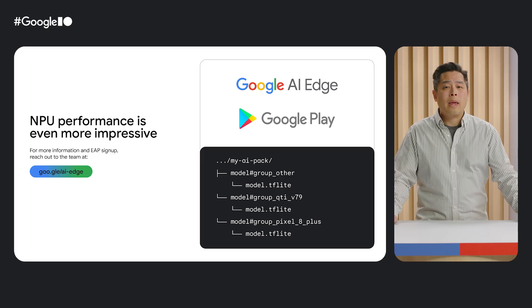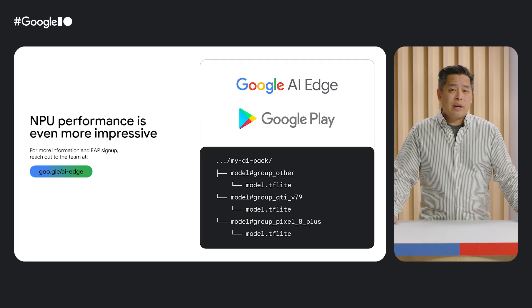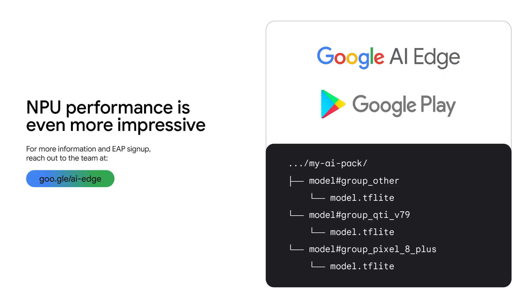We'll be adding support for more vendors in the coming months. MediaTek and Qualcomm integrations are available today with more documentation on our website. When the models are compiled for each vendor, separate binaries are saved in directories for each target and bundled into new AI packs that we've developed in cooperation with Google Play Store. This allows us to configure the correct model distribution for supported devices in addition to any necessary runtimes or dependencies. For more information and documentation, head on over to google.ai-edge.